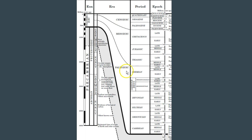The Paleozoic era is broken into the Permian period, Carboniferous, the Devonian, the Silurian, the Ordovician, and the Cambrian period. The Mesozoic era is broken down into the Triassic, Jurassic, and Cretaceous period. And then the Cenozoic era is broken down into the Paleogene, Neogene, and Quaternary period. Then you can see that each one of those periods is broken down even further to epochs.